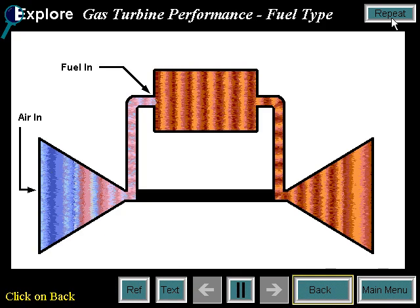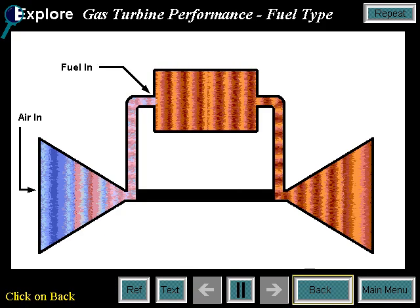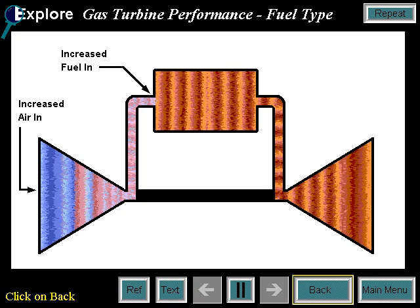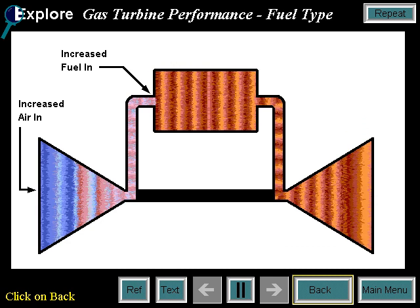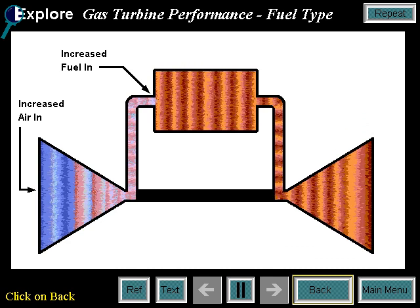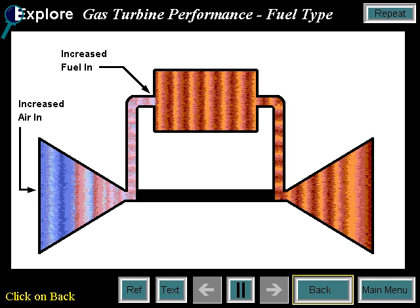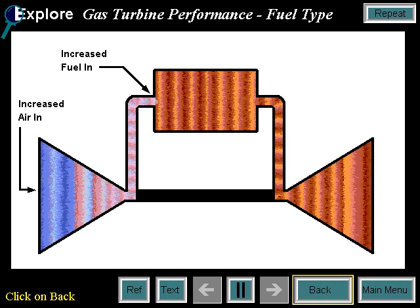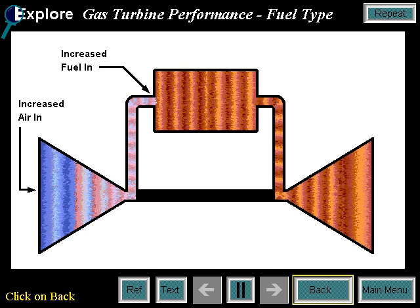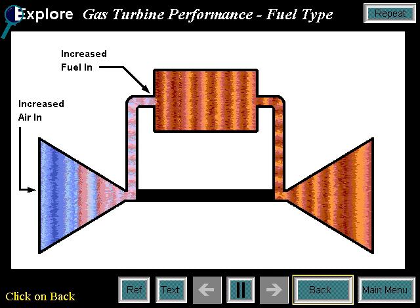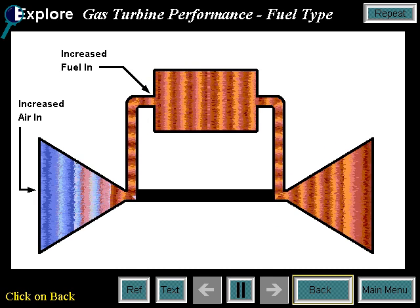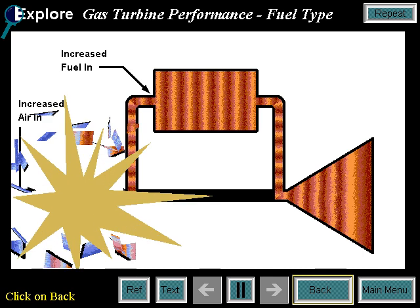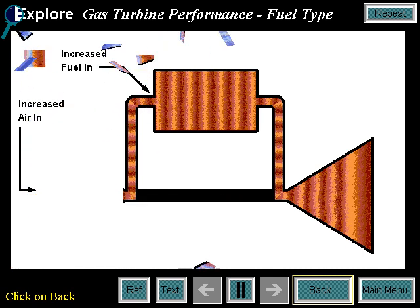When burning lower heating value fuels, turbine mass flow is increased because more fuel and air are required. This drives up the compressor pressure ratio, eventually encroaching on the compressor surge limit. This means that such a large volume of fuel is required to fire the machine that it begins to push back on the compressor discharge pressure, causing a reverse flow to occur in the compressor.